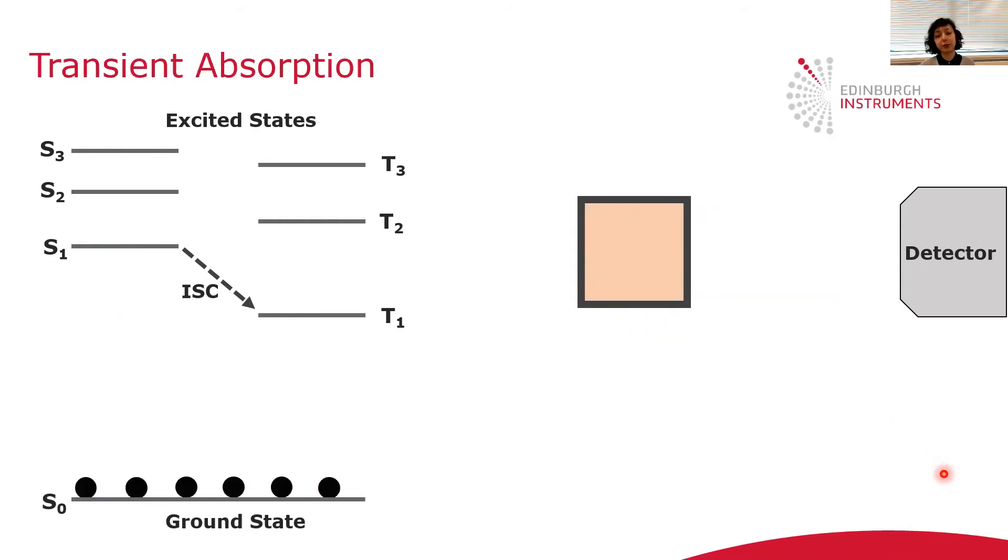For non-radiative probing of the relaxation, non-radiative relaxation of the excited states, you would use transient absorption. Transient absorption is a little different. It uses two sources of light, a pump and a probe, to excite the sample.